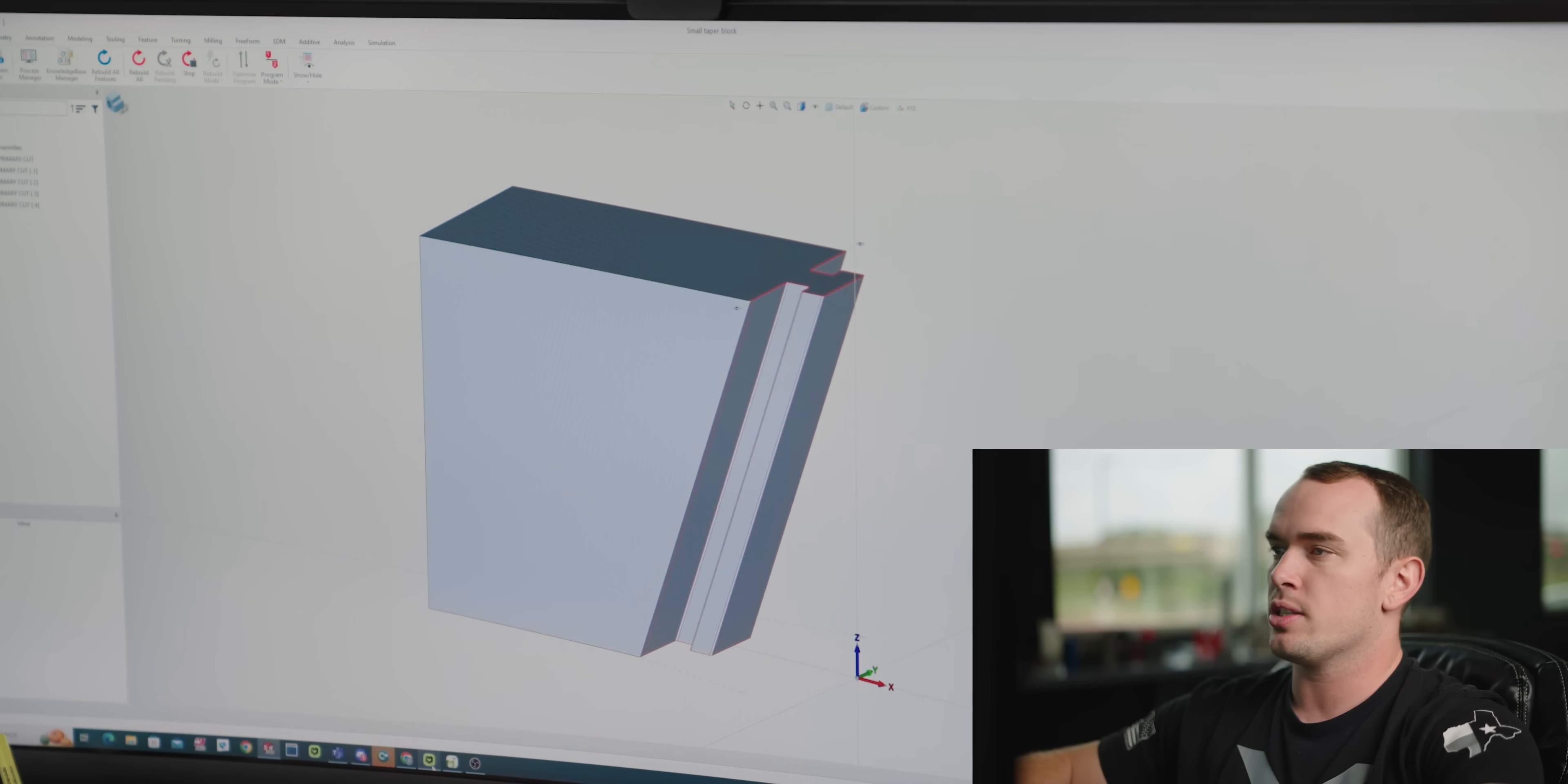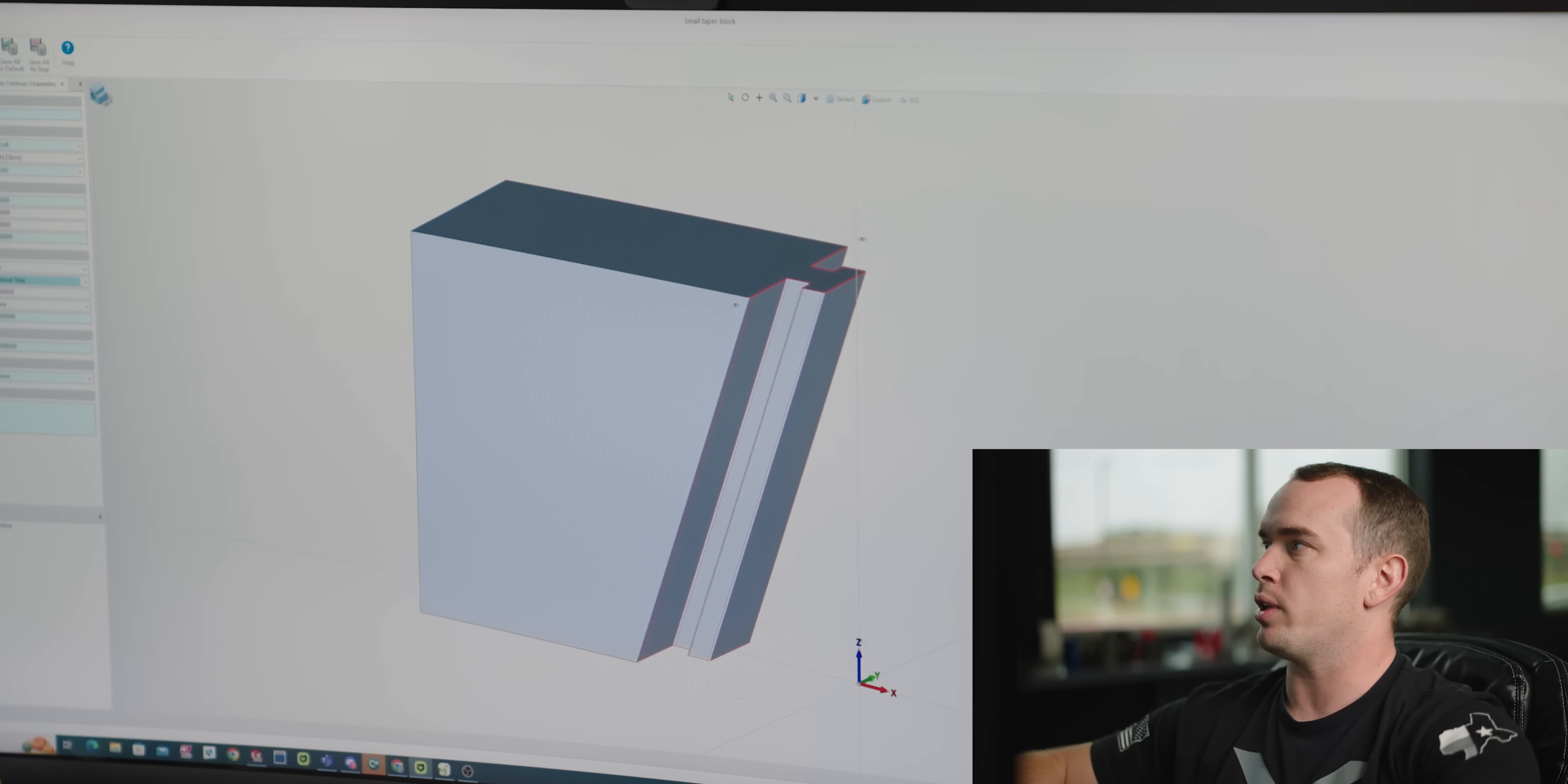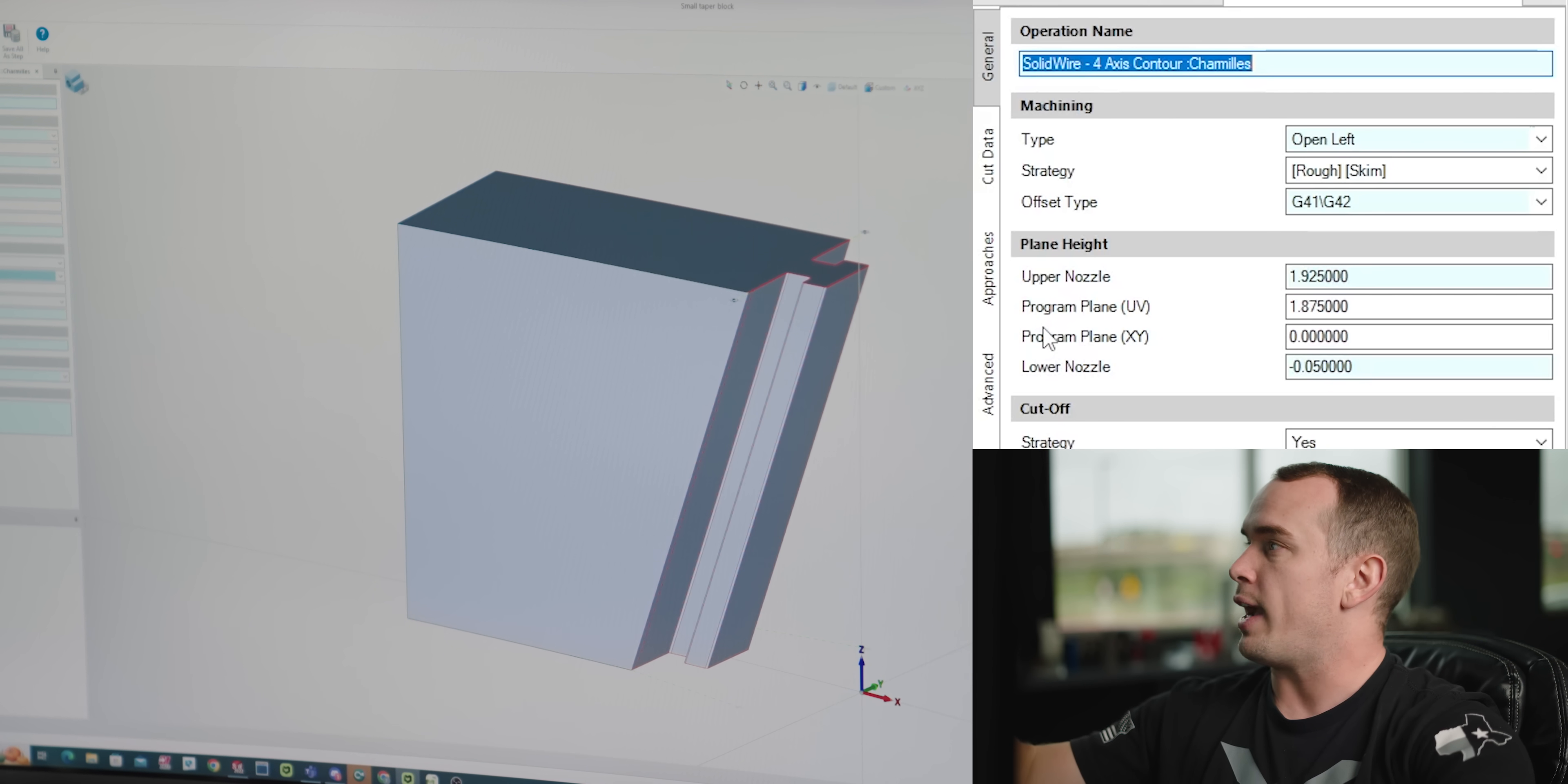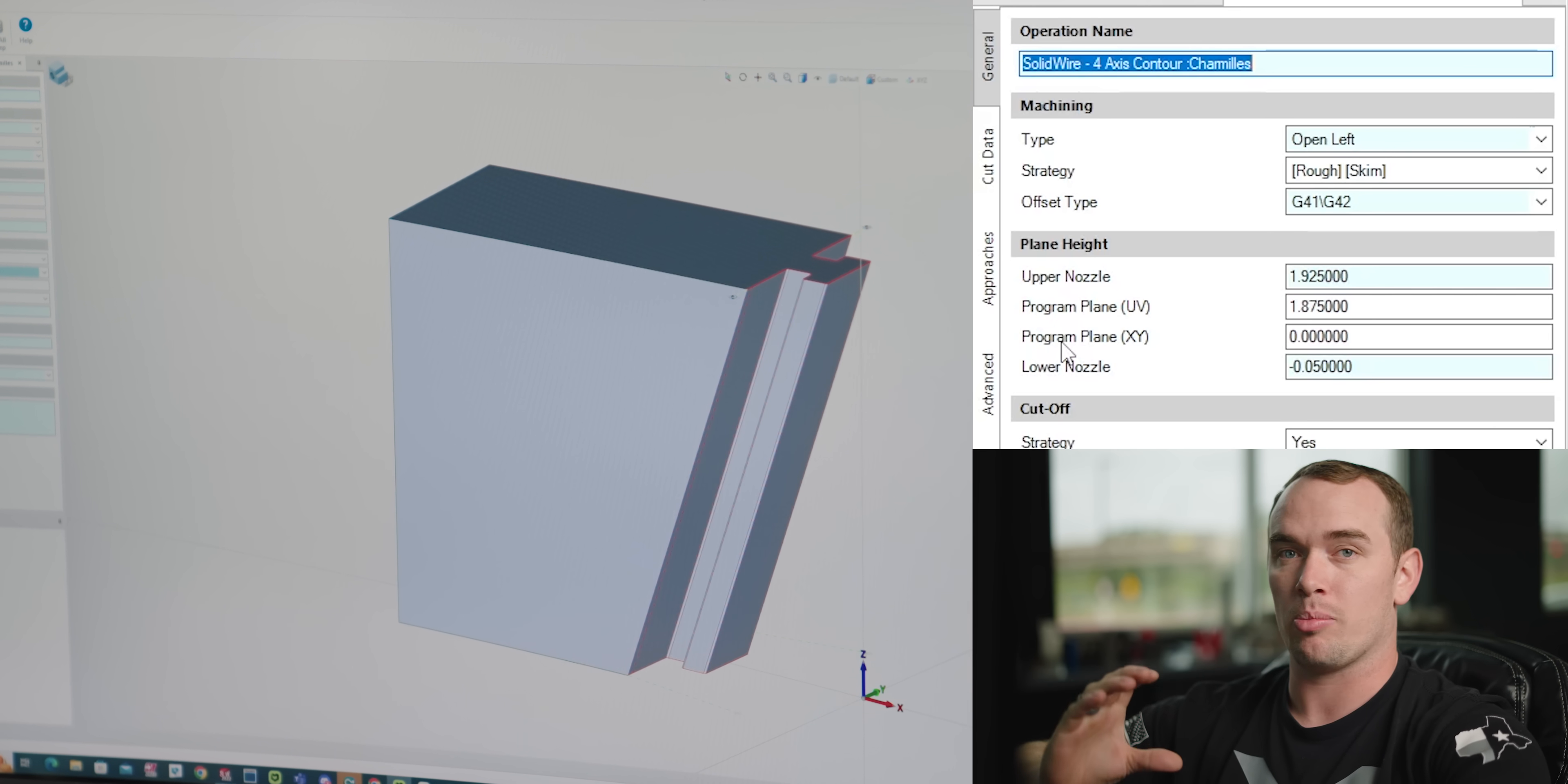In this case our taper does go all the way to the bottom of our part so if we go into our program we've got an XY program plane of zero because our part's going to be clamped to our table which is our zero point. We also have a UV program plane of one inch 875 because that is the thickness of our part.